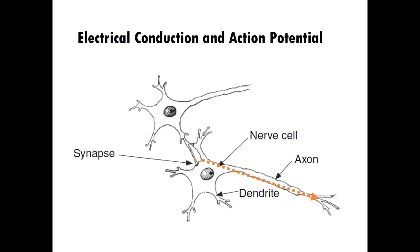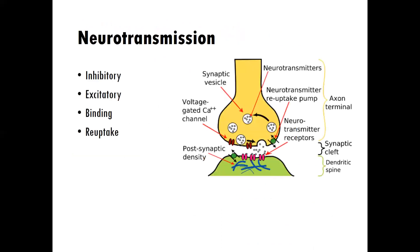We'll learn about electrical conduction and action potential. This is foundational to neurotransmission — how a signal is sent through the neuron so that it releases neurotransmitters and communicates with the next neuron through a process called signaling. Then we'll look at neurotransmission in detail: inhibitory neurotransmitters, excitatory neurotransmitters, the binding process, and also reuptake.